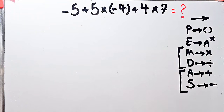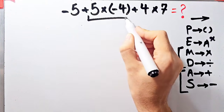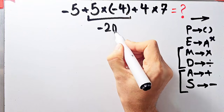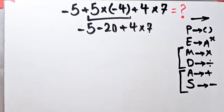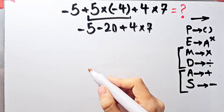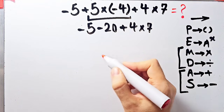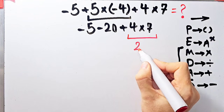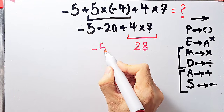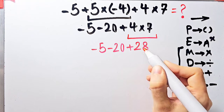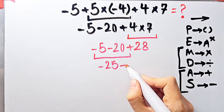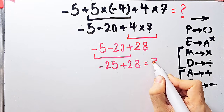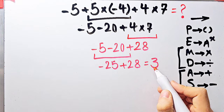According to PEMDAS, first we simplify the multiplication: 5 times negative 4 equals negative 20. Now we have: negative 5 minus 20 plus 4, then times 7. Next, 4 times 7 equals 28. Now we have: negative 5 minus 20 plus 28. Negative 5 minus 20 equals negative 25, and negative 25 plus 28 equals 3. The final answer is 3.